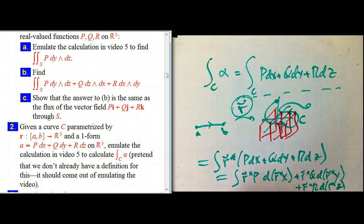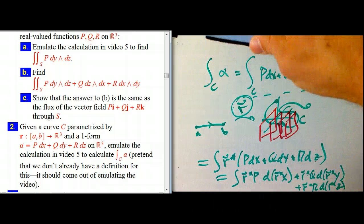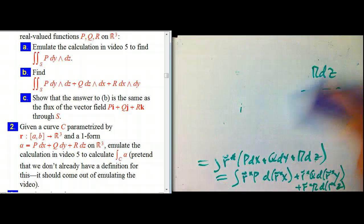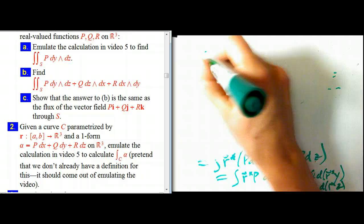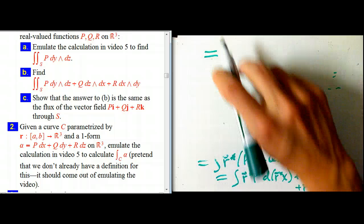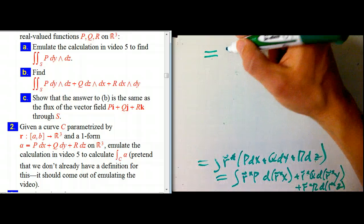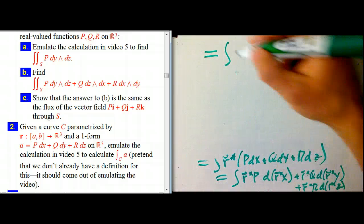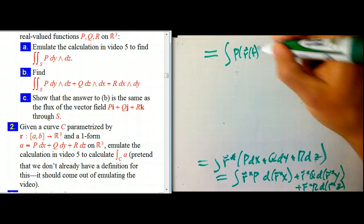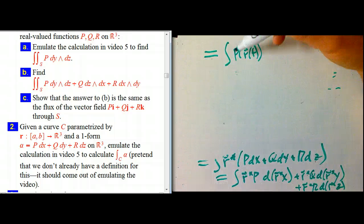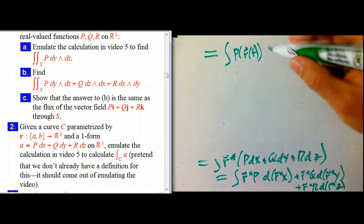So that's r star p d r star x plus r star q d r star y. Let's see if I can squeeze it in here. R star r d r star z. I know the handwriting isn't so great, but let me bring that up to the top here. So r star p, that's just p of r of t. And that's exactly the kind of thing we would get if this were the component of a vector field, for example.